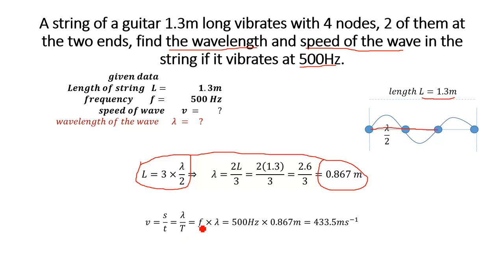Since time period is equal to 1 over f, or we can say 1 over t is equal to f, we have the equation for velocity is equal to f times lambda, frequency times wavelength. Now frequency is given in the numerical: 500 Hertz.